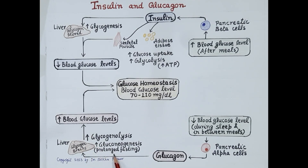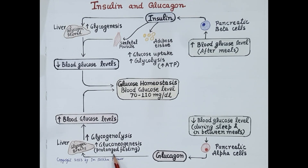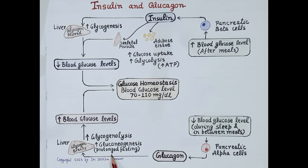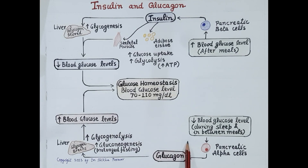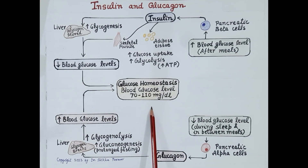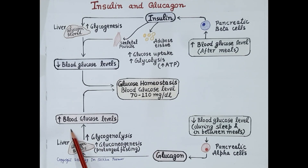But during prolonged fasting, glucagon promotes hepatic and renal gluconeogenesis to increase blood glucose levels. Substrates like lactate, amino acids, glycerol, etc. are converted to glucose. Thus reduced blood glucose levels rise and come back to the normal homeostatic level.